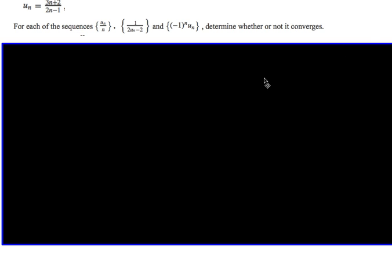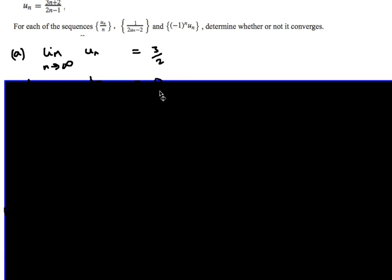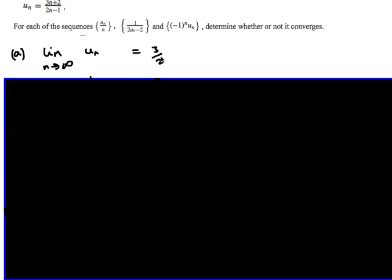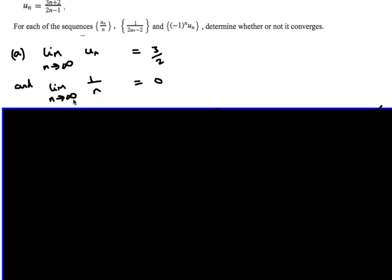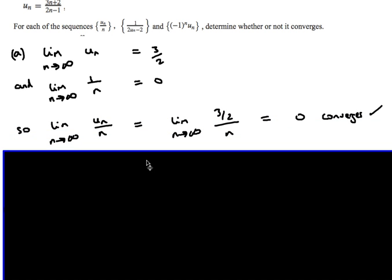The question then asks whether further sequences converge. For the first one, we know the limit of u_n is 3 over 2, and the limit of 1 over n is 0. So the limit as n approaches infinity of u_n over n is the same as the limit of 3 over 2 over n. Dividing by an ever larger number gets closer and closer to 0, so that limit is 0 and the sequence converges.